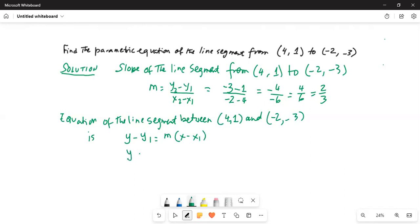Now, my y1 is 1, so y minus 1, my m is 2 thirds, my x is x, and then x1 is 4. So this is the relationship between y and x, and we need to establish a parametric equation.